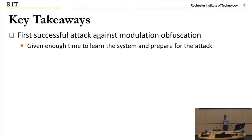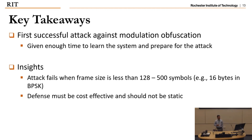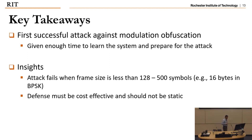A couple of key takeaways: it is possible to break modulation obfuscation, as we show in this work — but only when the attacker has enough time to study and train the system. The attack fails if the frame size is less than 128 to 500 symbols. The system might want to take that into account. Furthermore, the defense must be cost-effective and should not be static, so that the attacker doesn't have enough time to learn about the system.